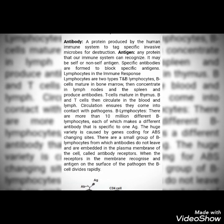B cells mature in the bone marrow, then concentrate in the lymph nodes and the spleen, and produce antibodies. T cells mature in the thymus. Both B and T cells circulate in the blood and lymph circulation to come into contact with pathogens. There are more than 10 million different B lymphocytes, each making a different antibody specific to one antigen. The huge variety is caused by genes coding for the antibody binding site changing. A small group of B lymphocytes have antibodies embedded in the plasma membrane called antibody receptors.